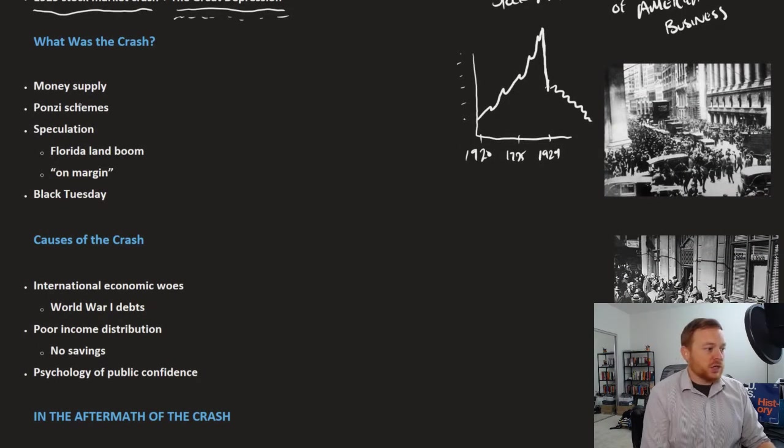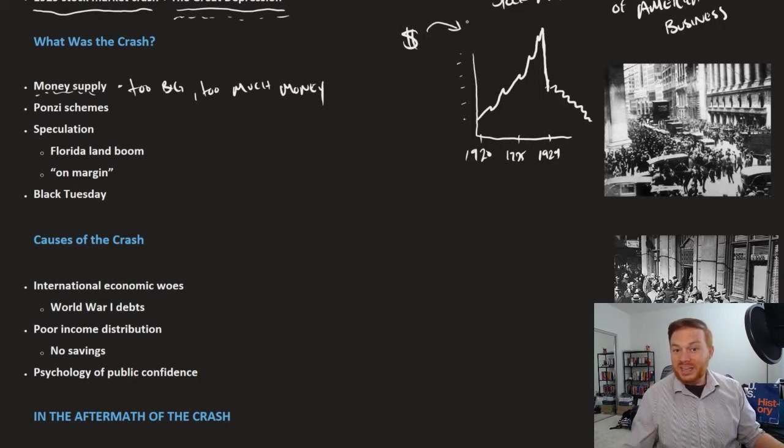So why was there a crash? Well, there was a couple of reasons. First of all, the money supply, it was simply too big. Too much money. And when there is excess money, a lot of that money can be pumped into the stock market to make it look inflated, essentially inflation. That's where the value or the price of things go up. So the stock market was inflated. The point was that these companies were never really worth that much to begin with, although there was a perception of it.